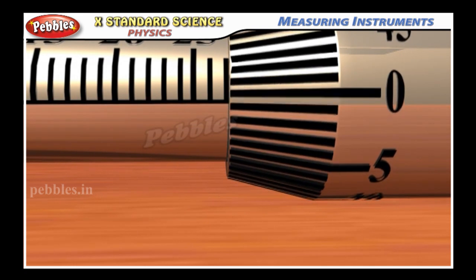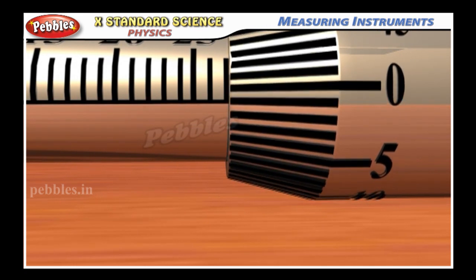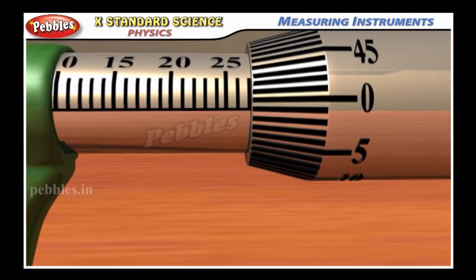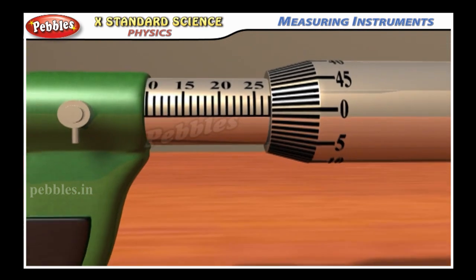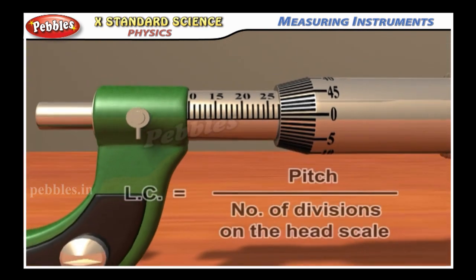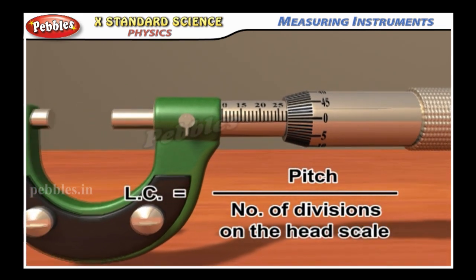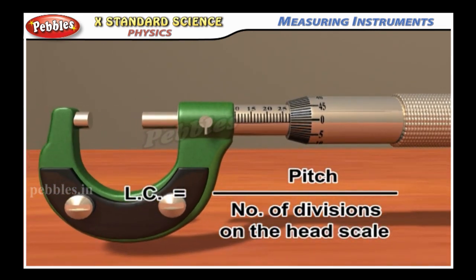Least count of the screw gauge: the distance moved by the tip of the screw for a rotation of one division on the head scale is called the least count of the screw gauge. Least count is equal to pitch divided by number of divisions on the head scale.